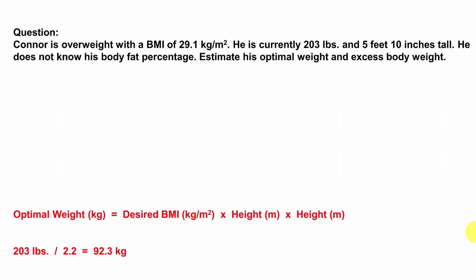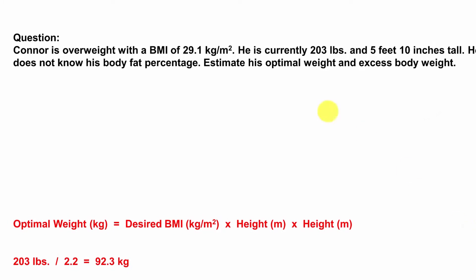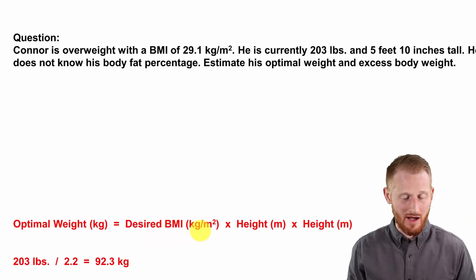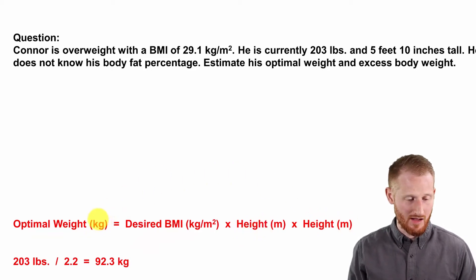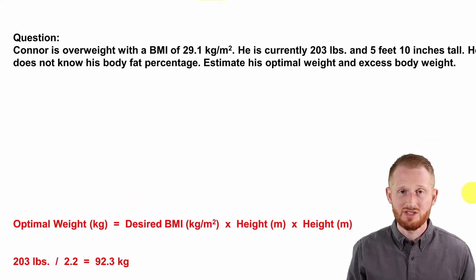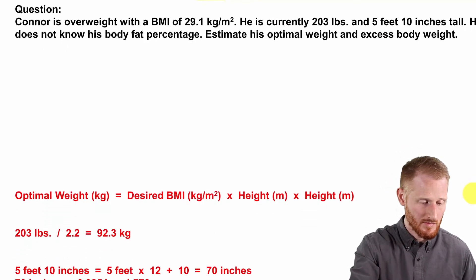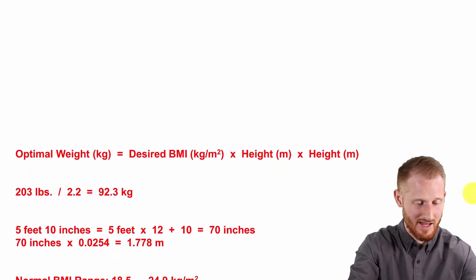The calculation for optimal body weight is: optimal body weight equals the desired BMI times the height in meters, times the height in meters again. Notice this is in kilograms and meters — the metric system — but our question uses imperial units, so we need to convert to metric first.